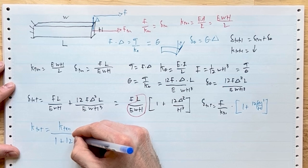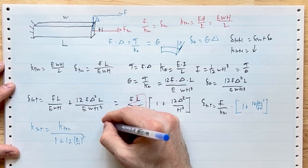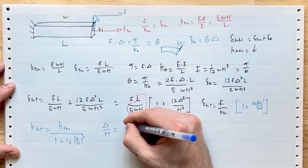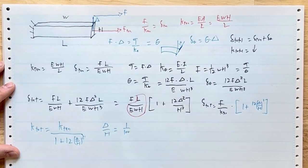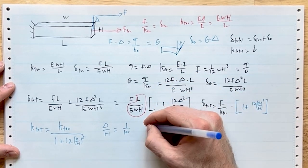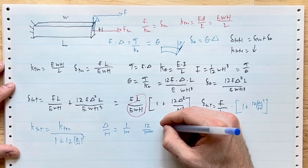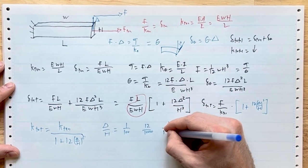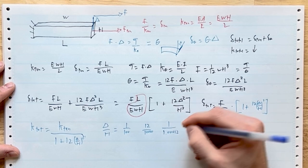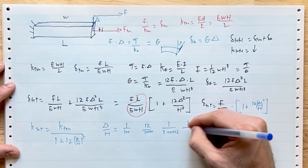Let's look at this. Let's say delta over h equals 1/100—you have a really well-aligned beam. So 1/100 squared turns into 1/10,000 times 12. That's going to be 12/10,000, which basically means your stiffness is 1 over 1.0012—it's basically good enough. Sorry, I made a mistake there. It's 1 over 1.0012, it's off by less than 0.1%.